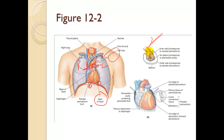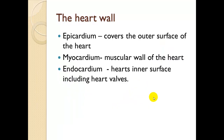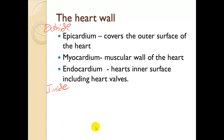Looking at the pericardium: the inner wall touching the organ is the visceral pericardium, the airspace corresponds to the pericardial cavity, and the outer wall is the parietal pericardium — this is what touches other organs. The pericardial cavity is fluid-filled and gives the heart protection. The heart wall from outside to inside: the epicardium covers the outer surface, the myocardium is the muscular wall, and the endocardium is the heart's inner surface including the heart valves.